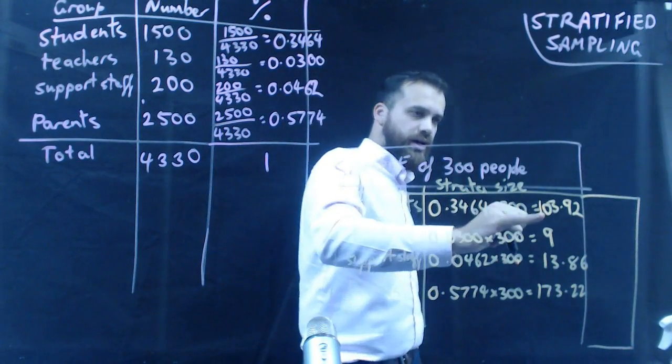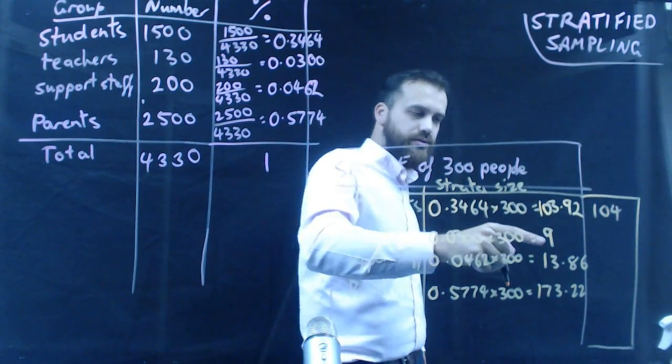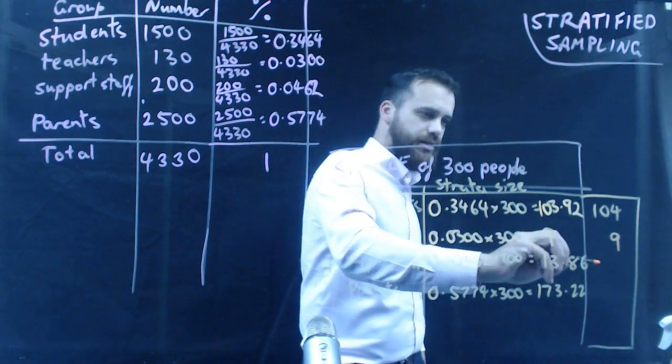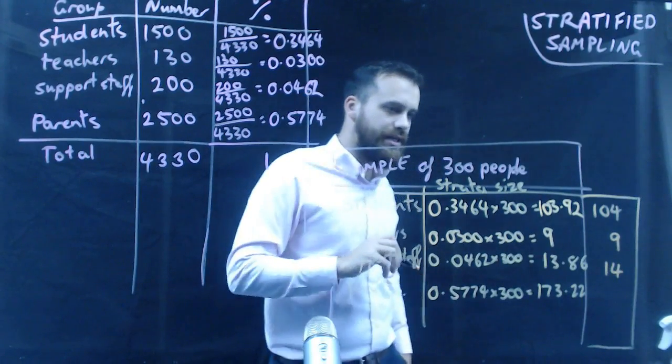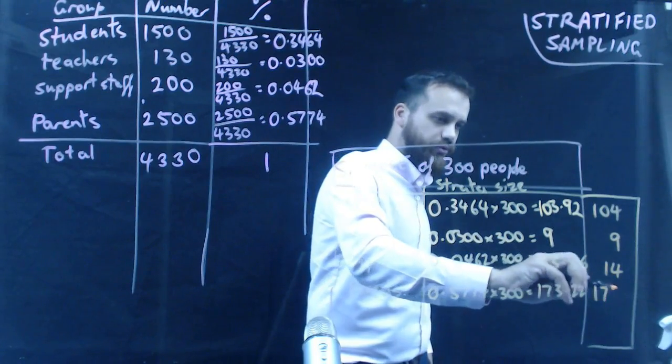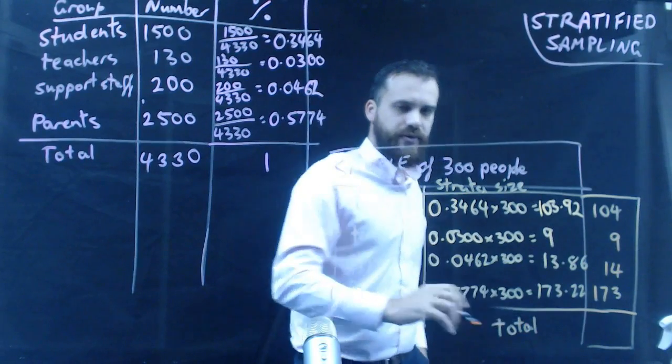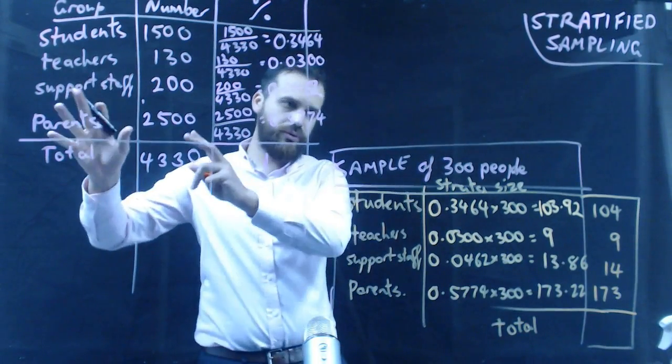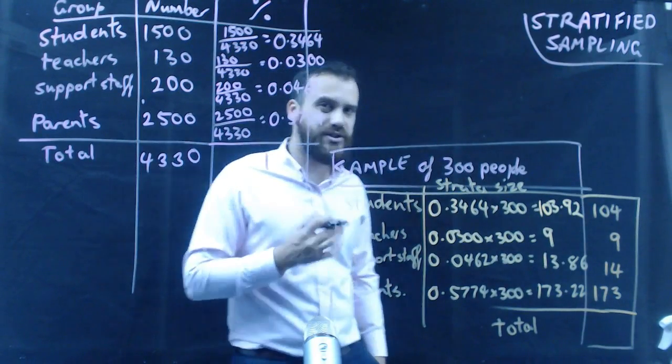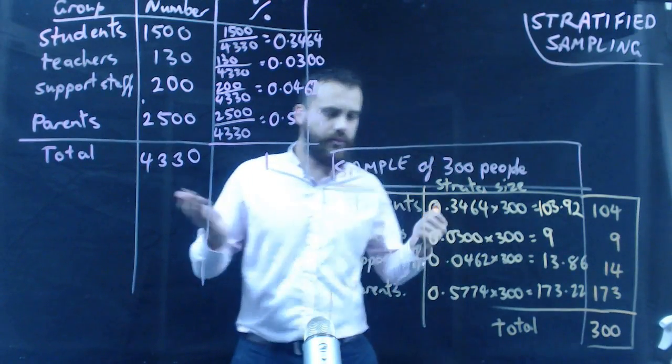So, students, 103.92. Well, we better have 104. Round up. Teachers, no rounding required. 9. Support staff, 13.86. Let's round up. We'll get 14. And parents, 173.22. Let's round down and we get 173. Now, remember what we're aiming for. We're aiming for a sample of the general population, a sample of 300 people. So, this total should be 300. If it's not, something's gone wrong with my rounding. Okay. We're in business.